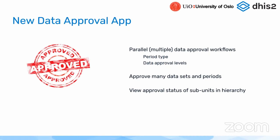A data approval workflow can also contain many data sets, not just one, so we can approve for many data sets at the same time. If you have many related data sets — about the same programmatic area or the same data stream — you can approve multiple data sets in one go, which could make the process much more efficient.